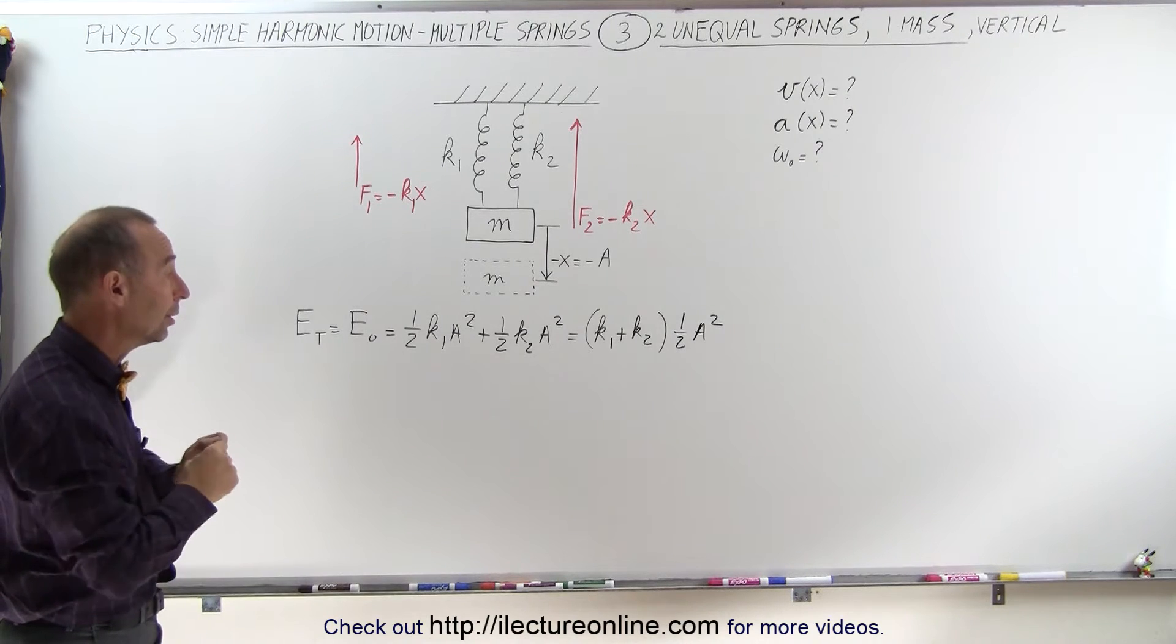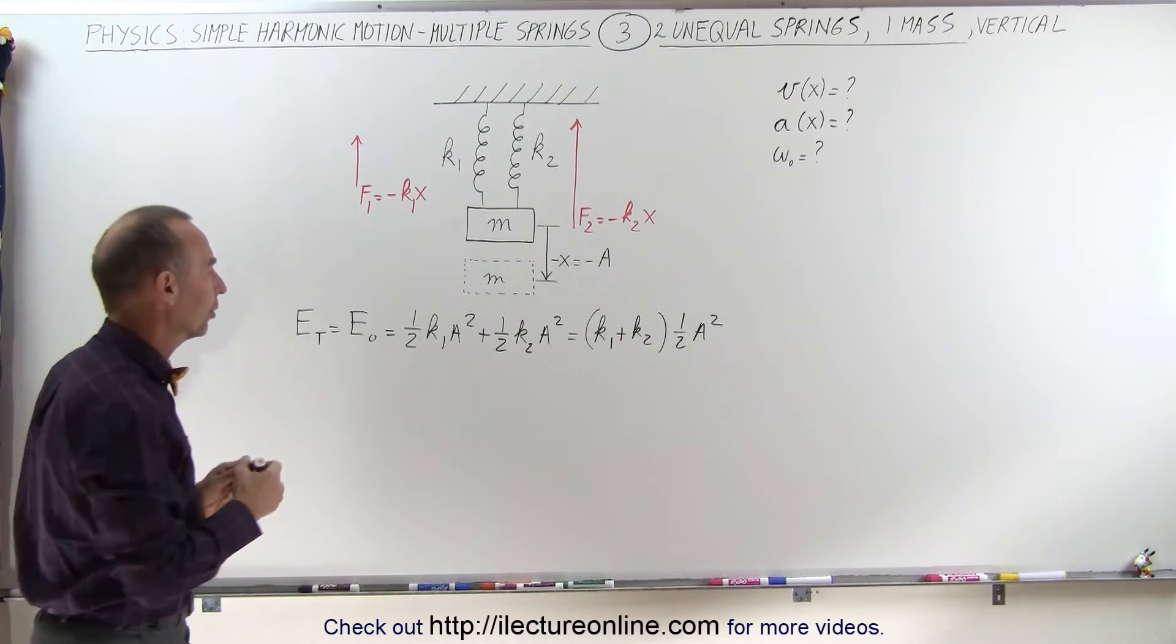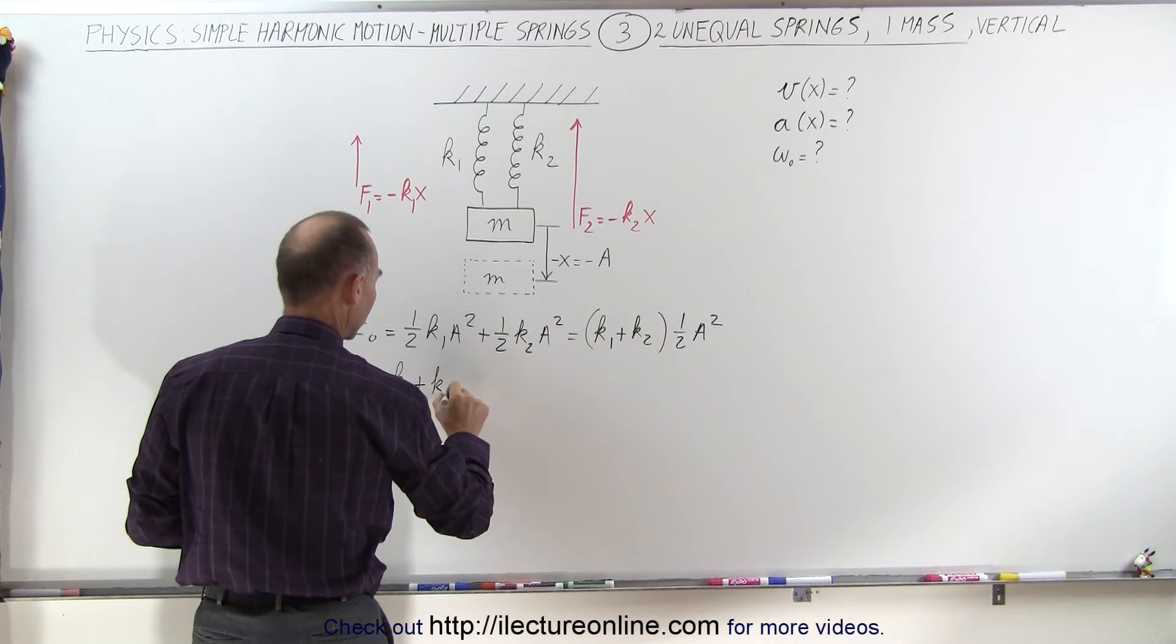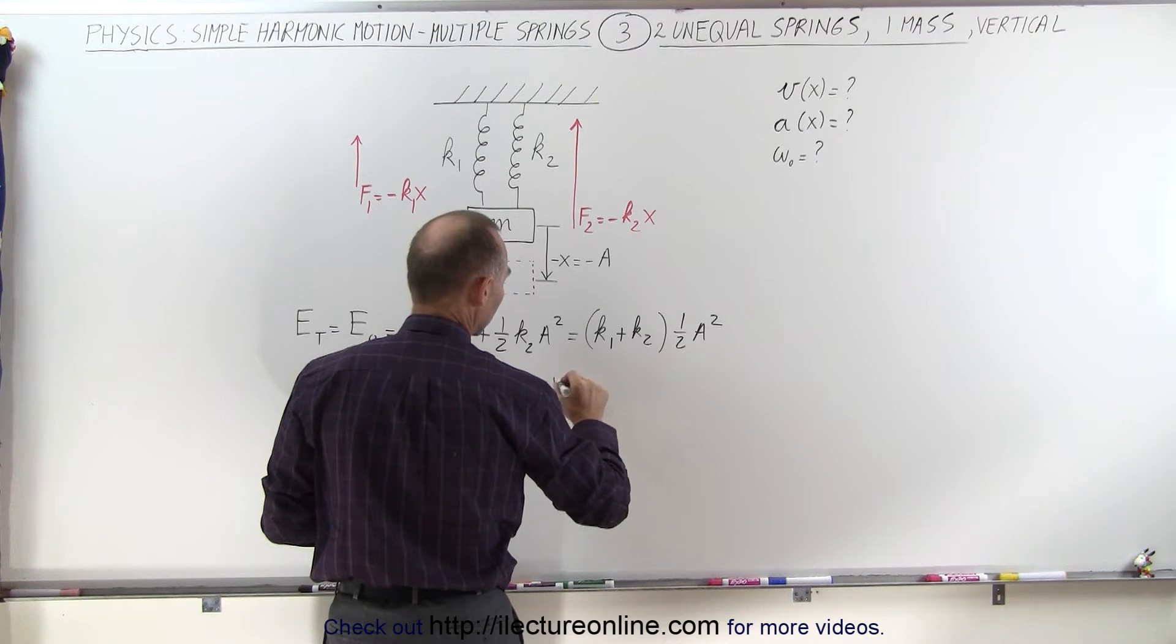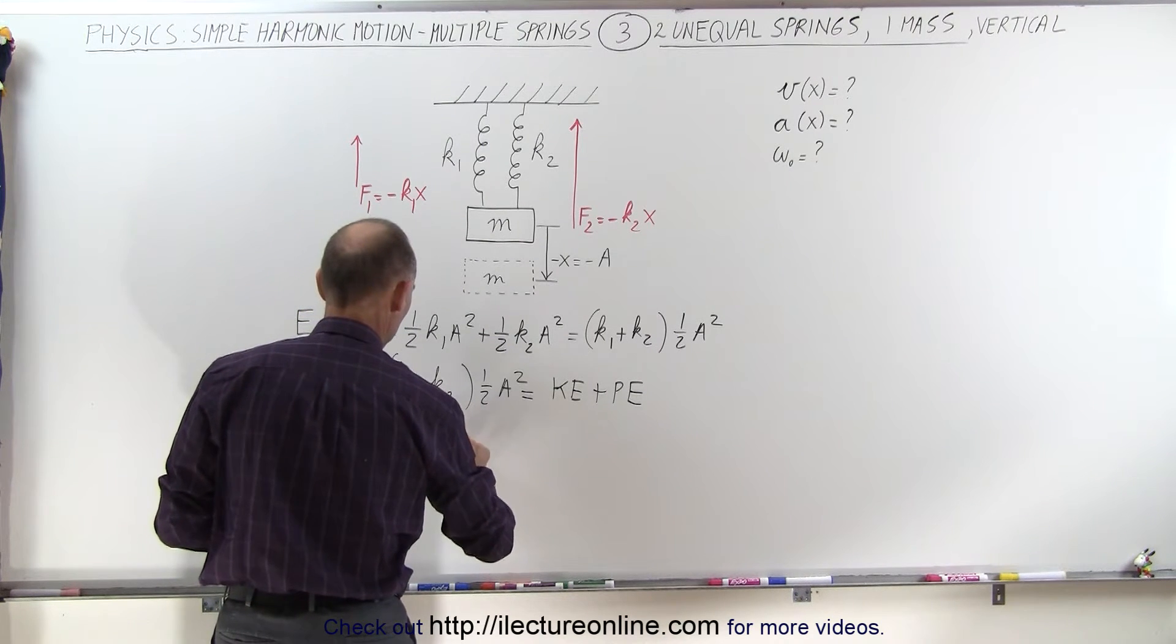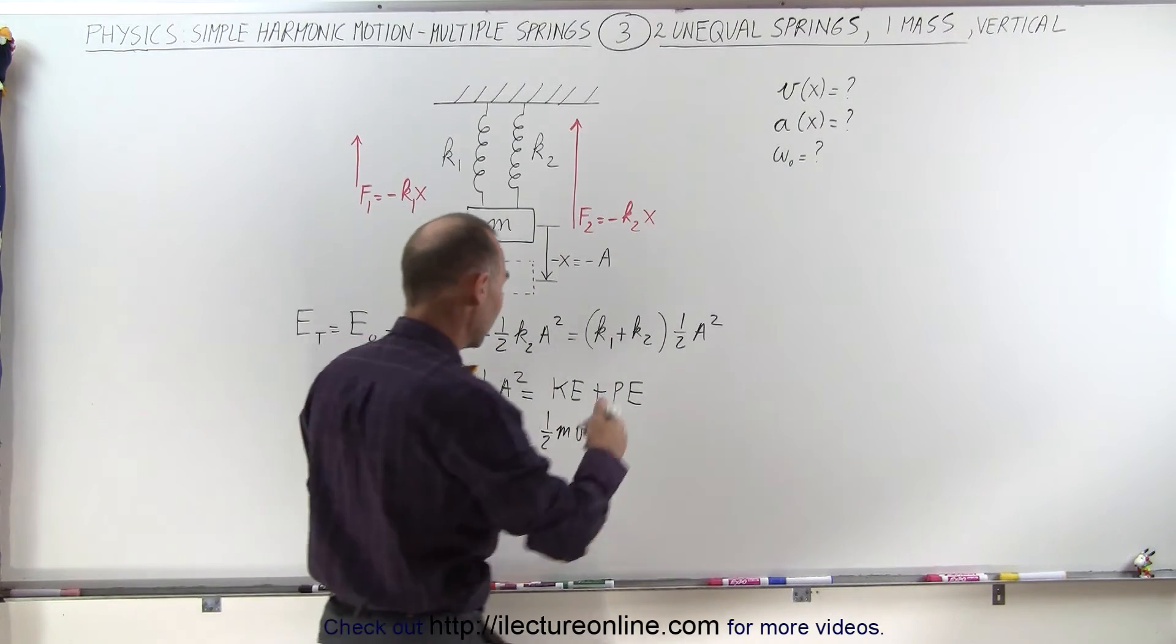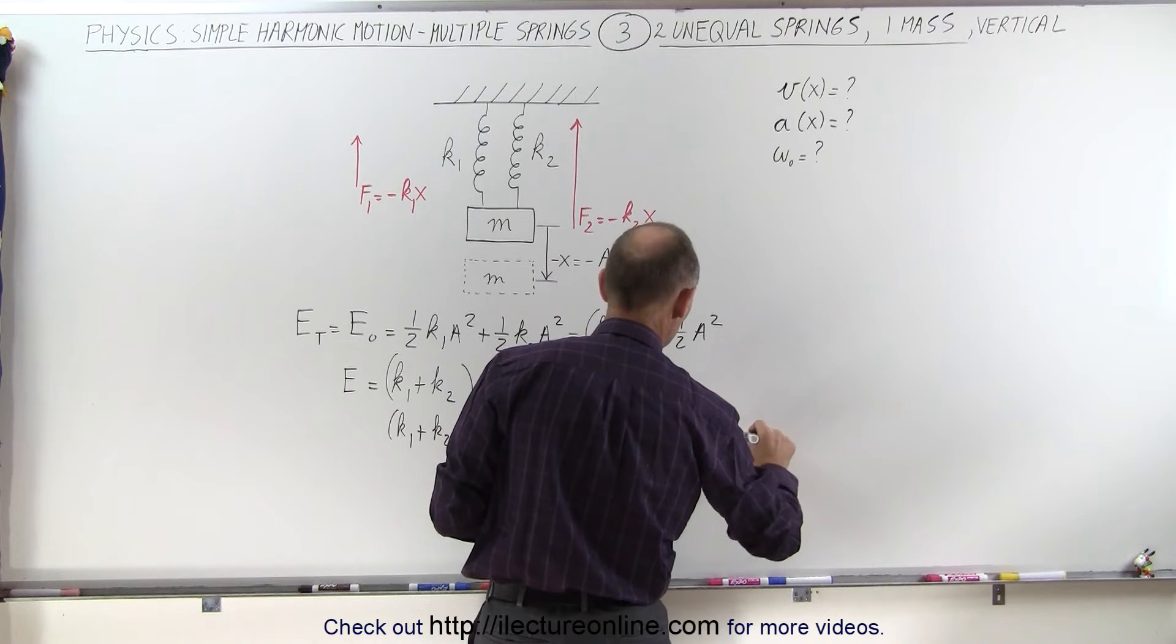Now the next thing we're going to do is we're going to say, well, the total energy that we put into the system is going to be equal to the sum of the kinetic and potential energy as it's oscillating back and forth. So we can say that the energy at any point in time is going to be equal to the initial energy, which is equal to, let's write it as k1 plus k2 times one-half A squared, which will always equal to the sum of the kinetic energy plus the potential energy of the system. So we can write that k1 plus k2 times one-half A squared is equal to the kinetic energy, which is one-half mv squared plus the potential energy of the system, which is the energy stored in the two springs at any point in time, which is one-half k1x squared plus one-half k2x squared.